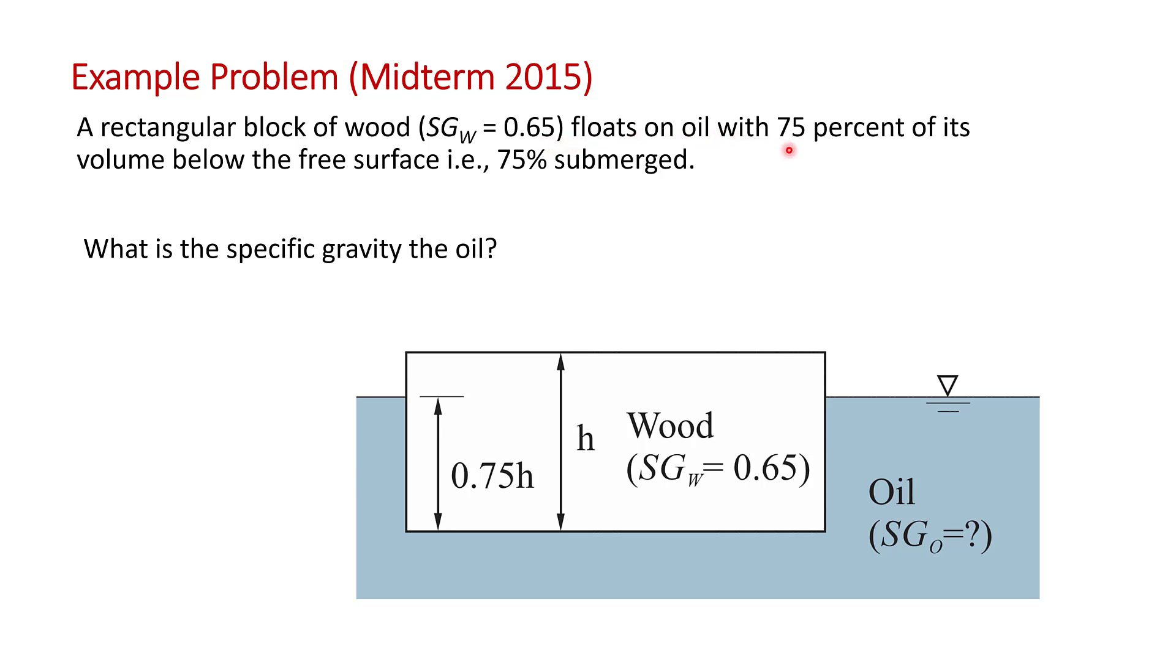So it floats on oil with 75% of its volume below the free surface. So I've drawn that here, that 75% of H is below the free surface of the oil. What we're after is to find the specific gravity of the oil that the wood is floating in.